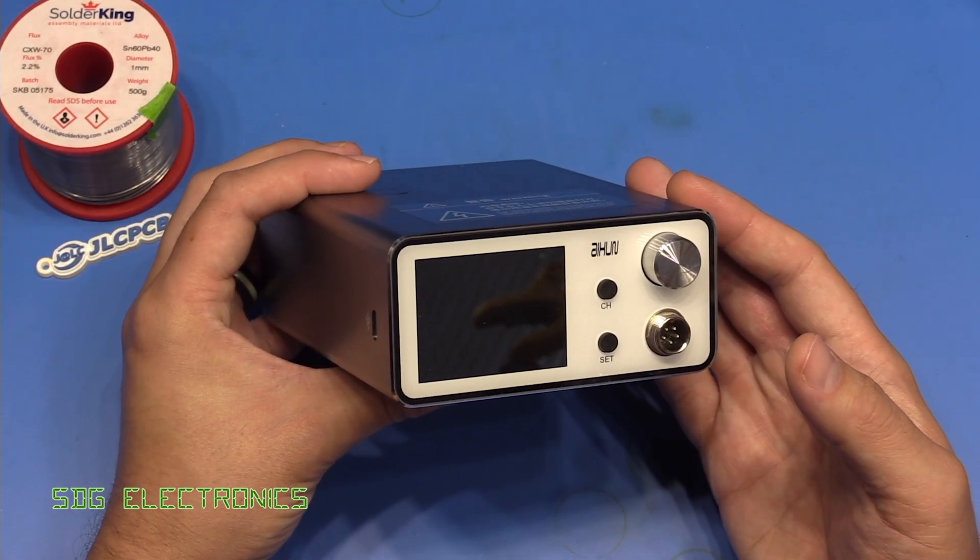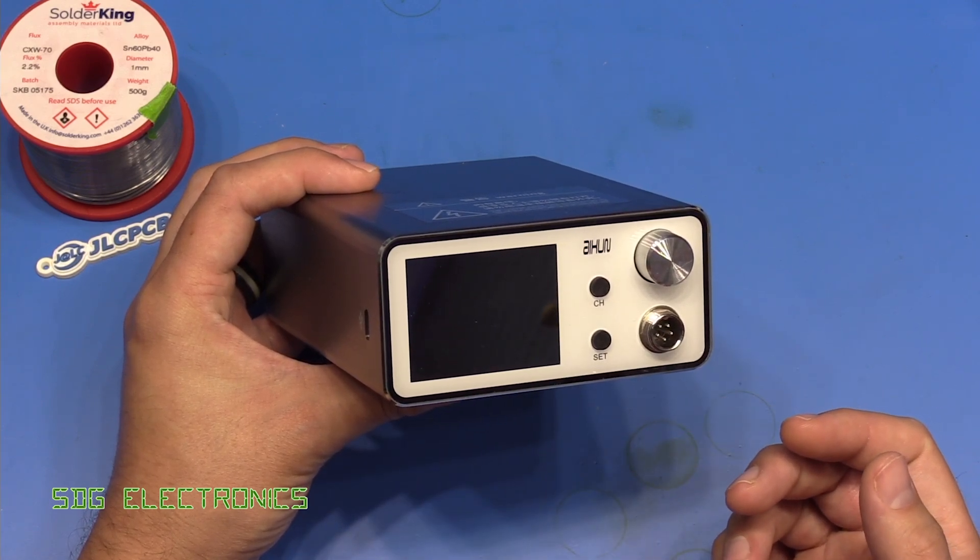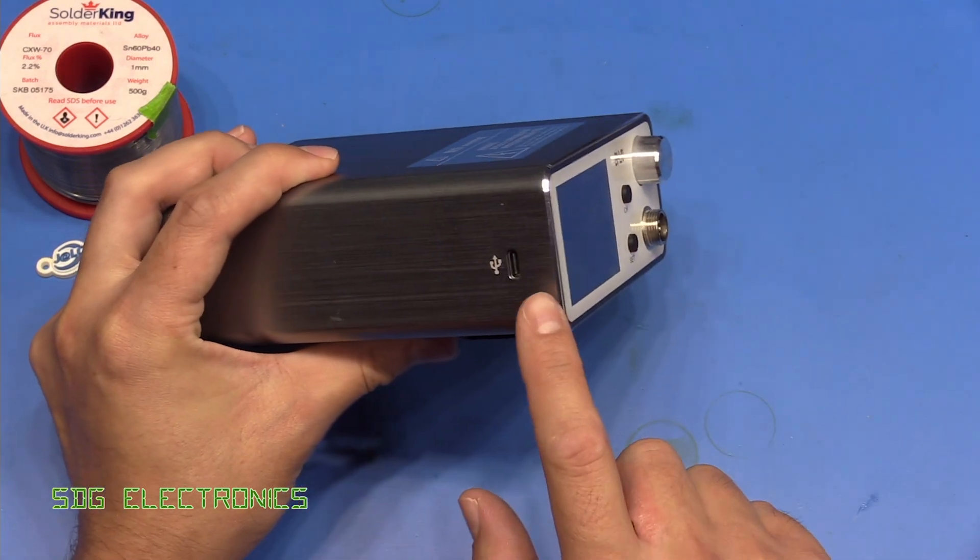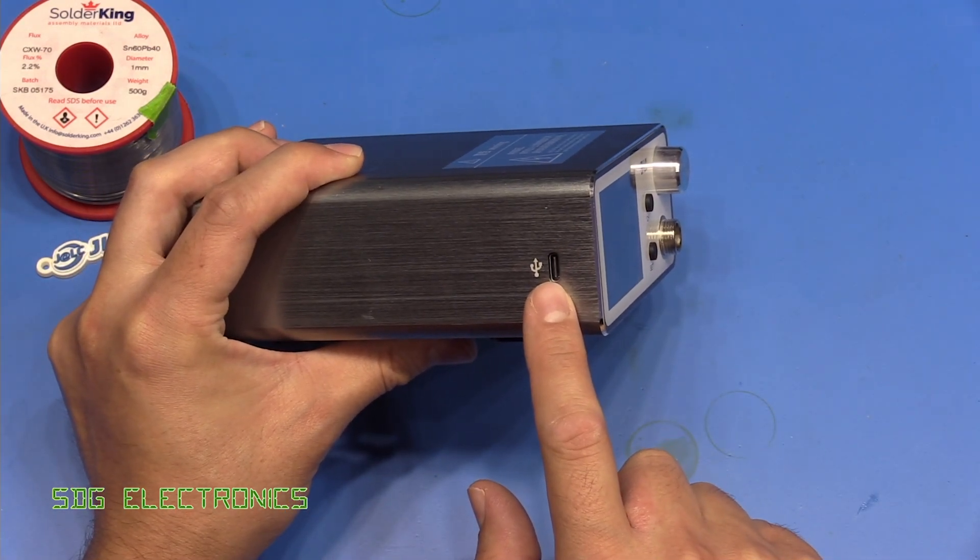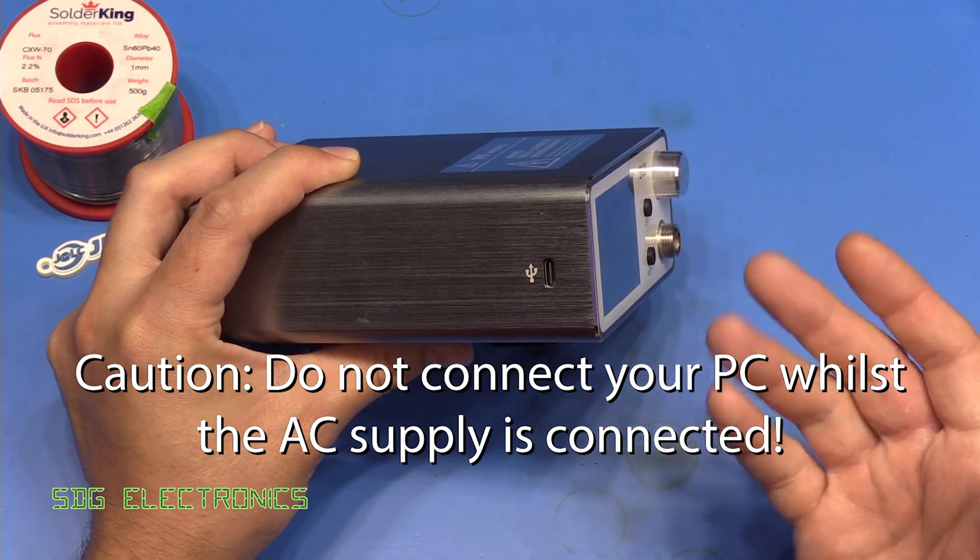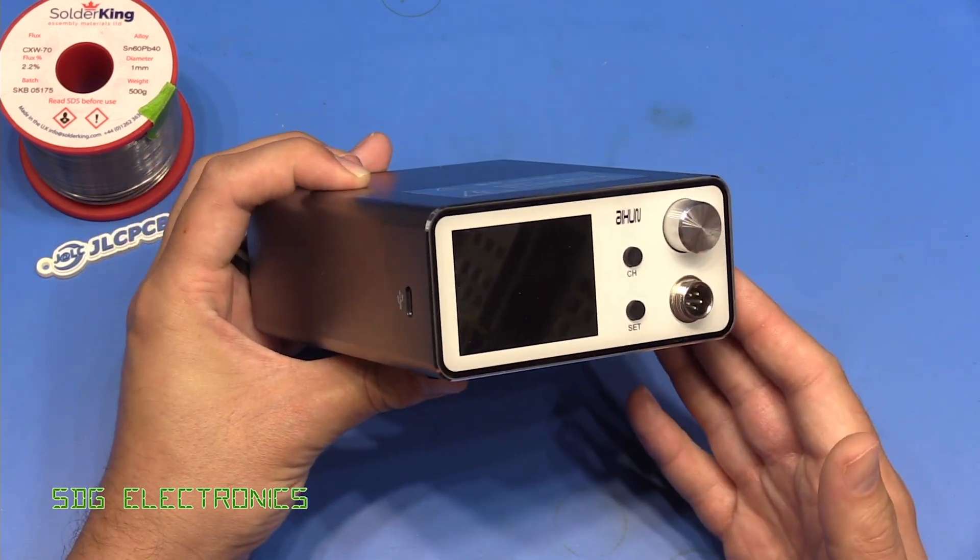One other thing that I did want to cover in this video is updating the firmware on this device, because the company has actually been releasing updates for the firmware on quite a regular basis. The firmware update is done through the USB-C port on the side. It does involve installing some software onto your PC, but then it communicates with this directly and does the updates for you.